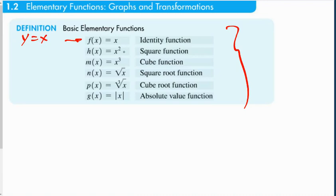After that we have x squared, which is the square function, x cubed, which is the cube function. These are pretty much self-explanatory between what the function looks like algebraically and the name. And we have the square root function, the cube root function, and the absolute value function.